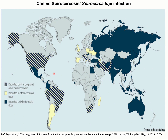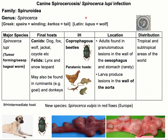Here you can see that Spirocerca lupi infections are reported in dogs and different other carnivores in different continents of the world. Spirocerca lupi is distributed in all continents of the world except Antarctica.